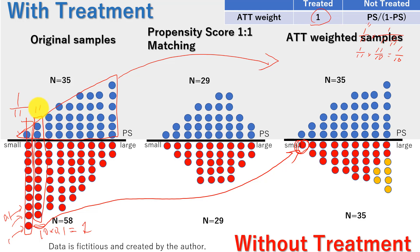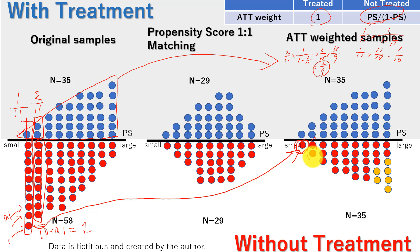For the next column, we have a total of 11 and 2 get treated. So the propensity score is 2/11. The ATT weight for untreated is 2/11 times 1 over (1 minus 2/11), which equals 2 over (11 times 9/11) = 2 over 9. We give each of the 9 untreated dots a weight of 2/9, so those 9 dots become 2.